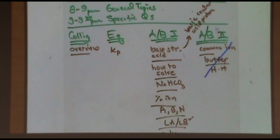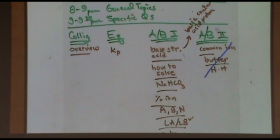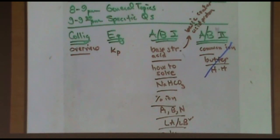Question about adding a weak base to a buffer: that effect is so insignificant we usually don't even solve it. A weak base cannot push a buffer noticeably because it's too weak. That's why you've always seen strong acids or bases added to buffers in these problems. If you were to do it, you'd have to find the net acid or base somehow, which would probably require an ICE table.